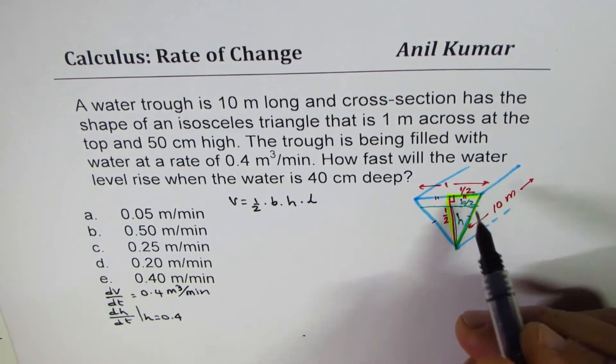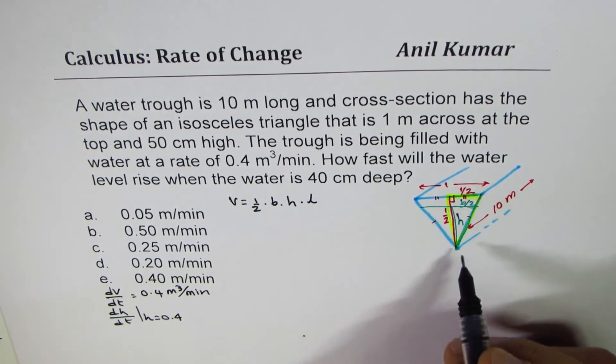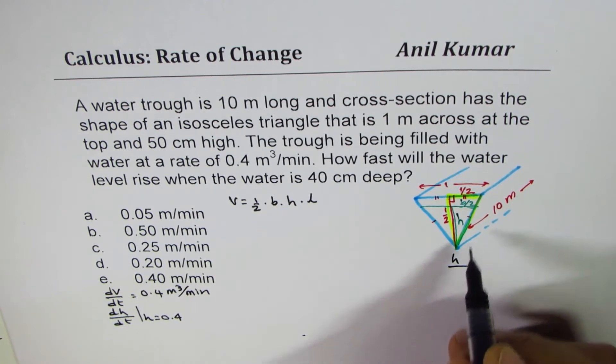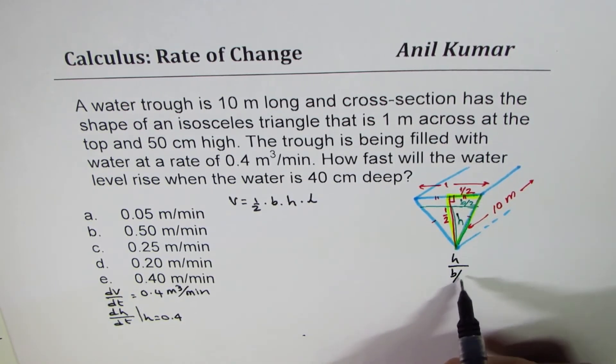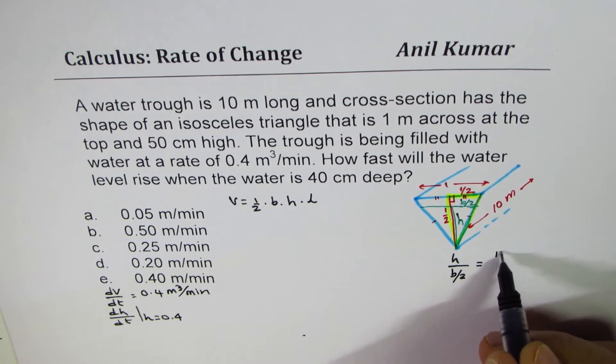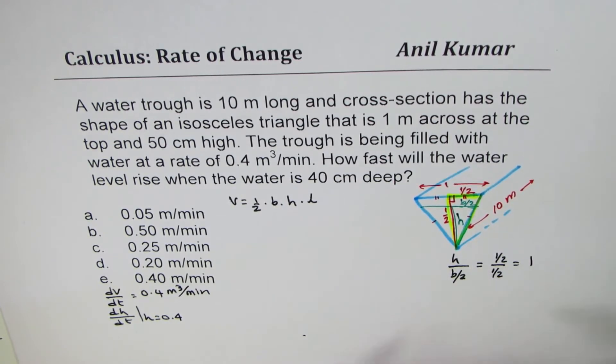Half and half is kind of 1. So what we have here is height over half of base is equals to half over half, which is 1.